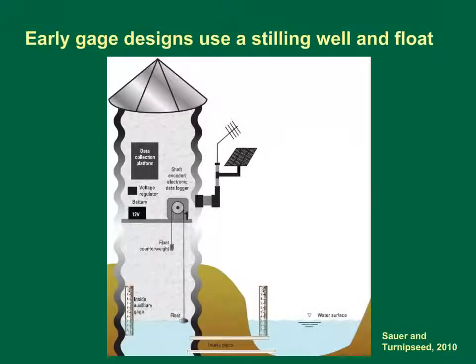This schematic diagram shows a stream gauge with a stilling well next to the stream. A float assembly is used to measure the distance from the pulley to the water surface in the stilling well. The stilling well is used to protect the float assembly and dampen surface flow oscillations. The stilling well is connected to the stream by multiple intake pipes. The objects that look like partially submerged rulers are staff gauges used to manually check the water level. Gauges with stilling wells have inside and outside staff gauges to ensure that the stilling well matches the river level. In this type of gauge, the float line is connected to a pulley that turns a shaft.